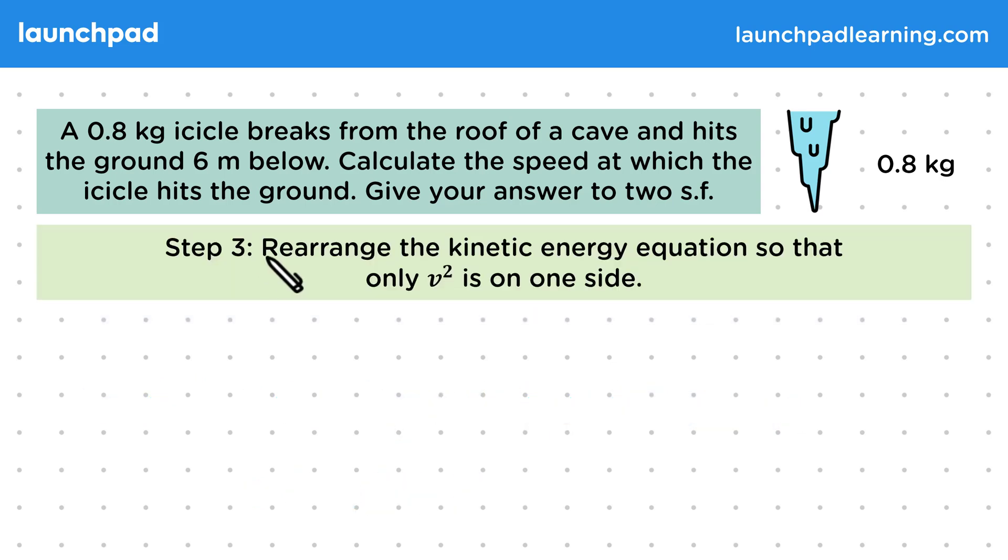Then for step three, let's rearrange the kinetic energy equation so that only v squared is on one side. So EK is equal to half mv squared, and we can rearrange this algebraically as long as we do the same action on both sides, and we can also swap around the two sides. So we start by multiplying both sides of the equation by 2.